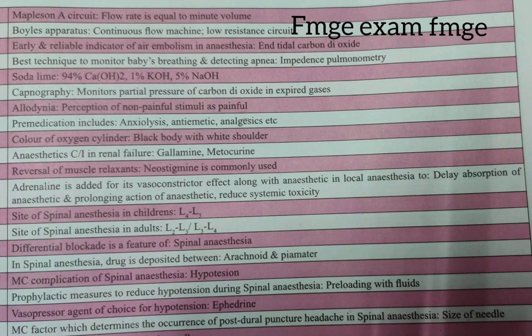Vasopressor agent of choice for hypotension is epinephrine. Most common factor which determines the occurrence of post-dural puncture headache in spinal anesthesia is the size of the needle. Prophylactic measure to reduce hypotension during spinal anesthesia is pre-loading with fluids.